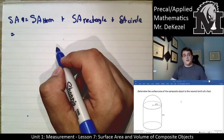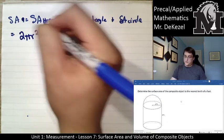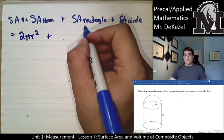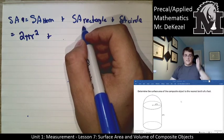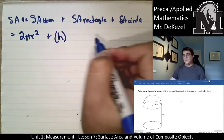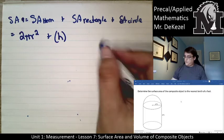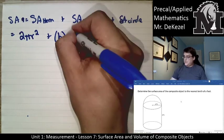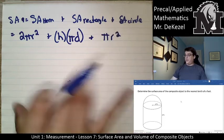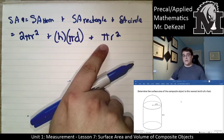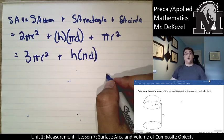The surface area of a hemisphere — just the outside curved part, not the circle that's covered — is 2πr². The surface area of the rectangle: if we cut the cylinder, one side would be the height, and the second side is actually the circumference of that circle, which is πd. Then the surface area of the bottom circle is πr². We can combine the 2πr² and πr² into one term: 3πr². So the total surface area equals 3πr² plus h times π times the diameter.